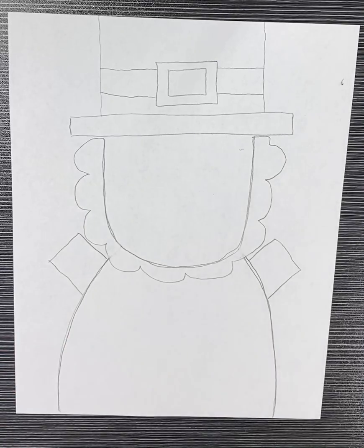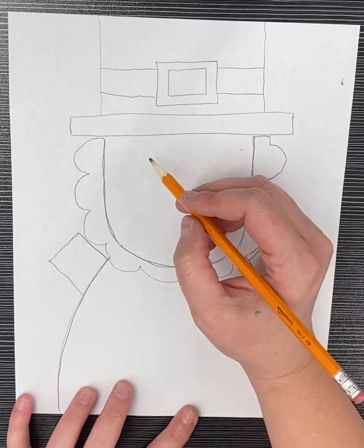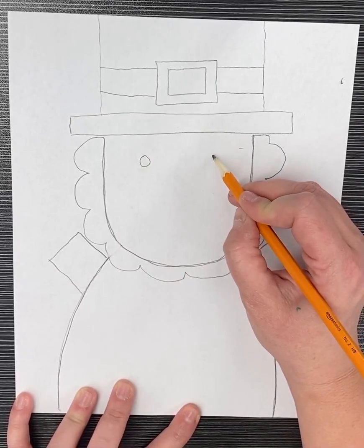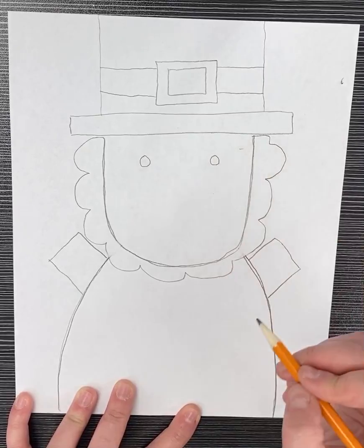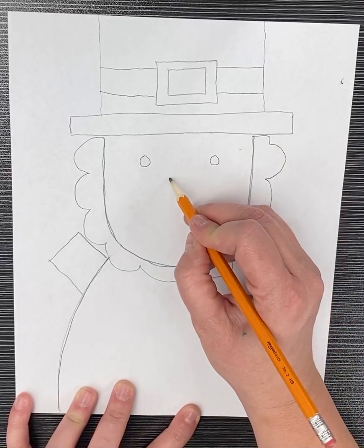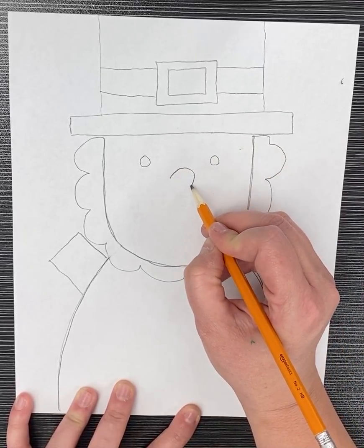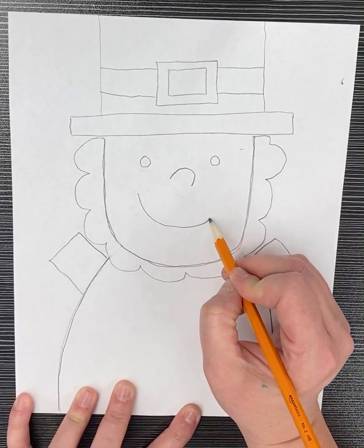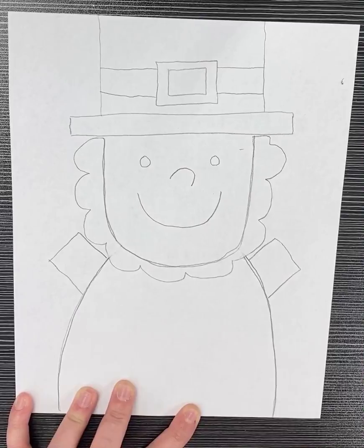Now let's give this cute little guy a face. So his eyes, we're just going to do two little black circles like so. A little button nose. And then he needs a nice big smile.